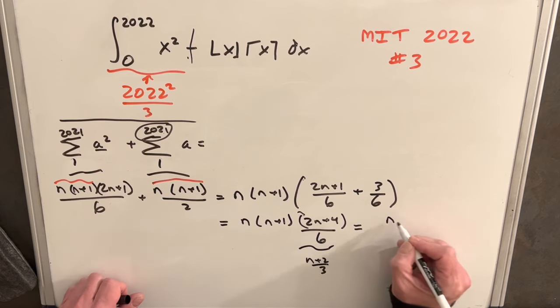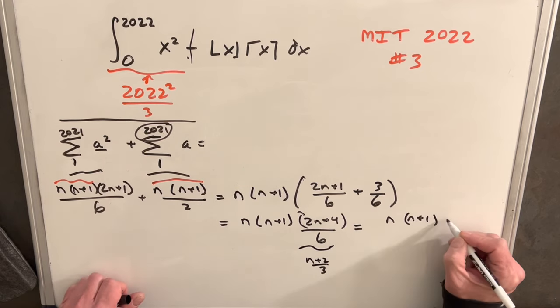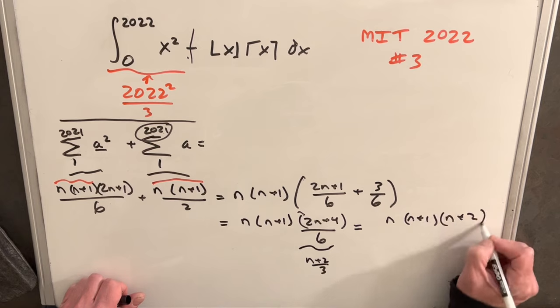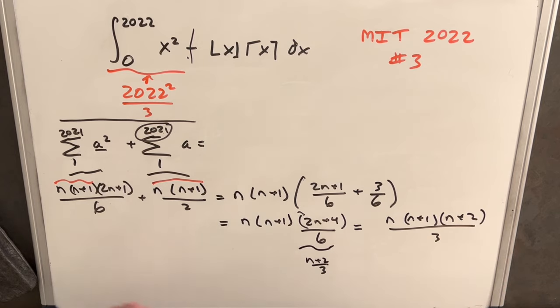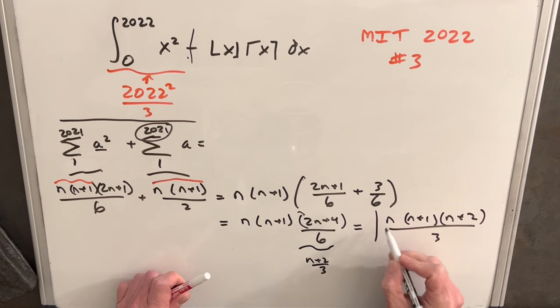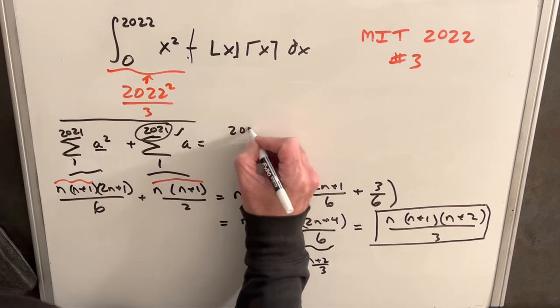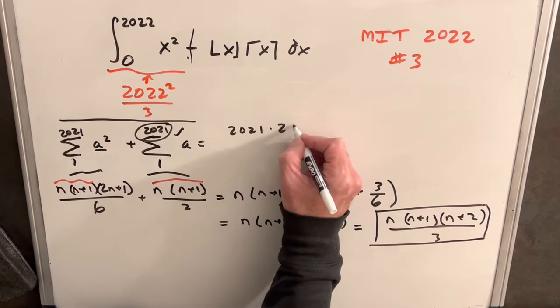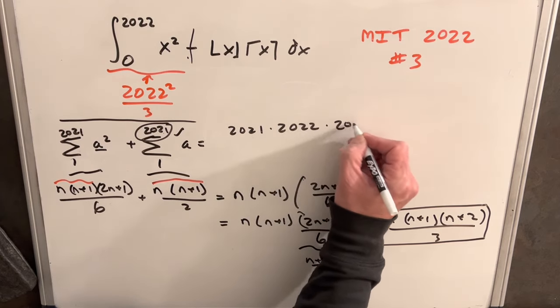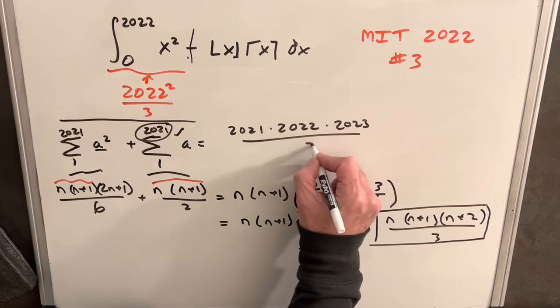We can write this piece as n plus 2 over 3. So we'll have n times n plus 1, n plus 2 over 3. This is the formula for triangular numbers. Using this and knowing our n is 2021, we can rewrite this as 2021 times 2022 times 2023 all over 3.